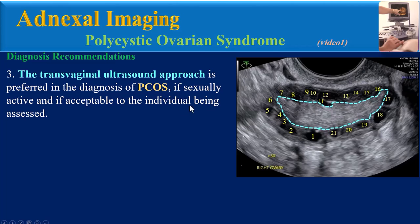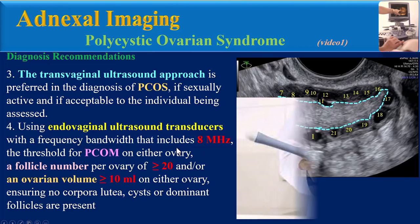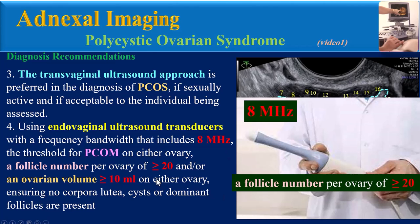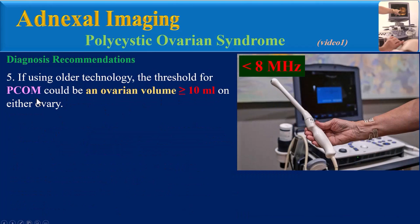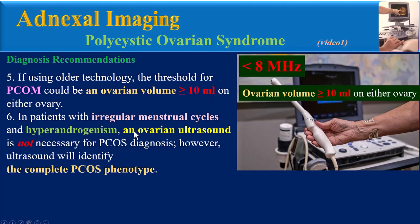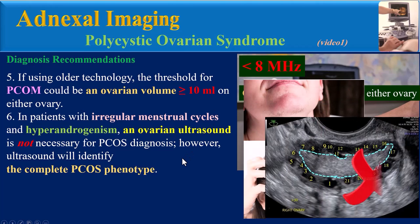The transvaginal ultrasound approach is preferred for PCOS diagnosis if the patient is sexually active and if acceptable to the individual. Using an endovaginal transducer with a frequency bandwidth that includes 8 MHz, the threshold for PCO morphology is a follicle number per ovary of 20 or more and/or an ovarian volume of 10 milliliters or more on either ovary. If older technology is used, the threshold may be based on ovarian volume of 10 milliliters or more.